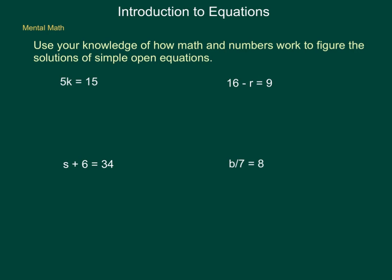Along with using given values, we can use estimation or mental math in order to check. We can do these mostly with simple one-step equations, which we'll study later in our look at Algebra 1. Use your knowledge of how math and numbers work to figure the solutions of simple open equations. 5k equals 15. If you know your multiples of 5, what would you multiply 5 by to get 15? We know that 5 times 3 equals 15. So 3 would be the solution to this open equation.